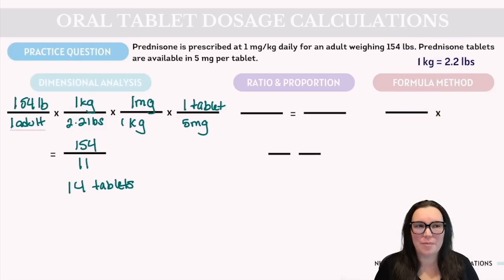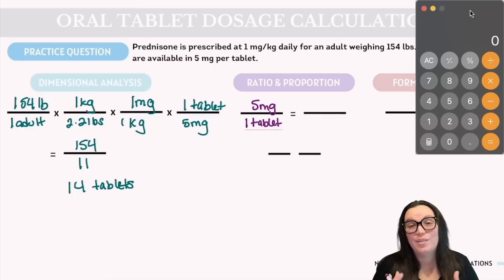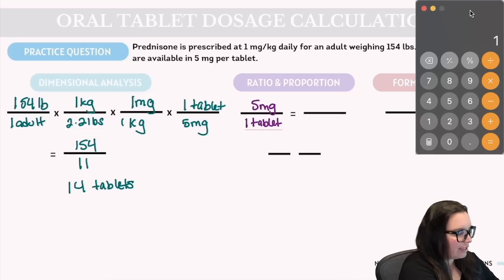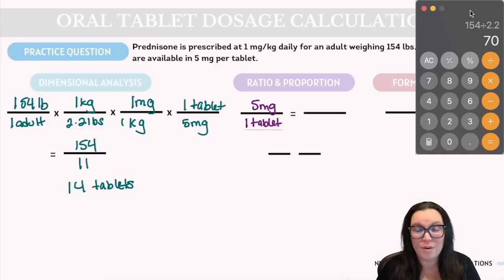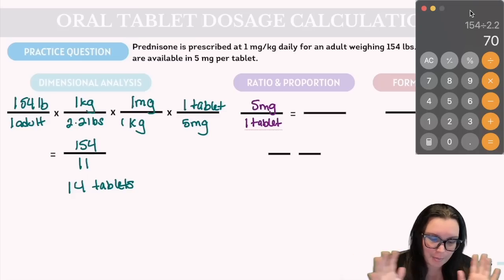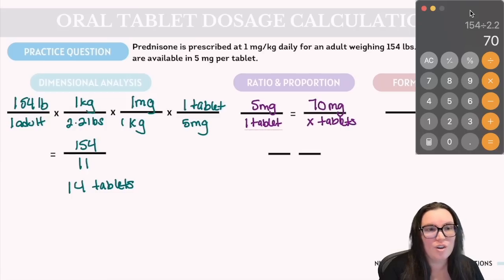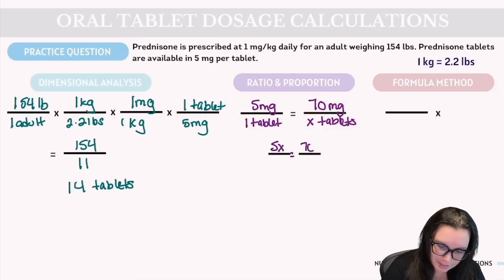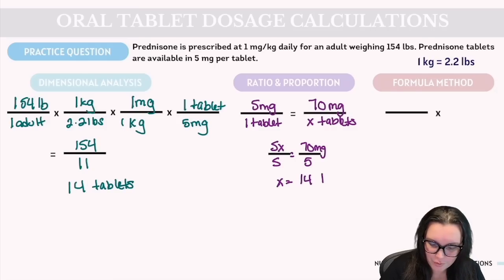Moving on to ratio and proportion: dosage we've got is 5 milligrams over one tablet. We need to convert 154 pounds to kilograms: 154 ÷ 2.2 = 70 kilograms, so the ordered dose is 70 milligrams. Setting up the proportion: 5 mg / 1 tablet = 70 mg / x tablets. Cross multiplication gives 5x = 70. Dividing both sides by 5 gives x = 14 tablets.